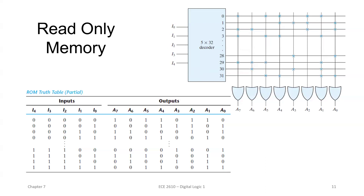For 32 bits, how it is programmed with the specified input: for example, the first line 0 0 0 0 0 gives output 1 0 1 1 1 0 0. The fuse between the first bit and second bit is not blown, so it is 0, and the next bits are 1 1 1. Wherever the output is 1, it is programmed with the fuse. Like this, all 32-bit combinations are shown.